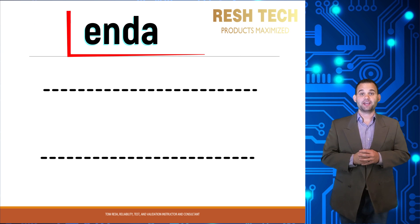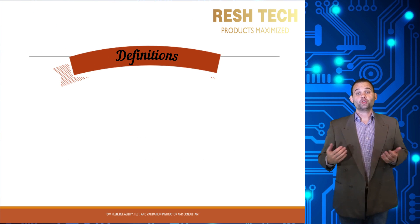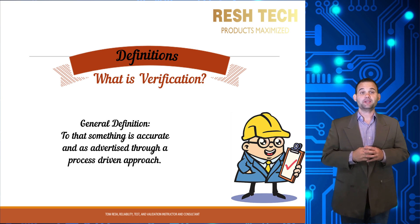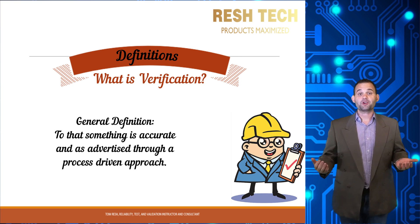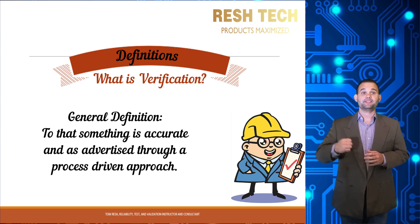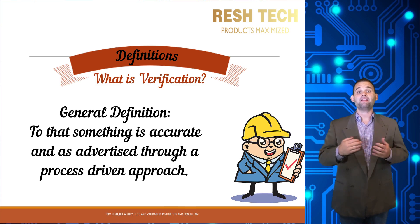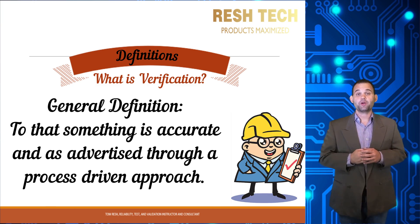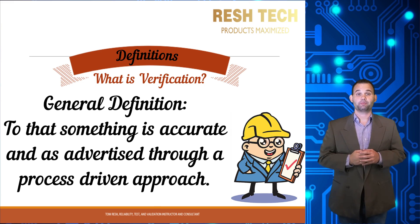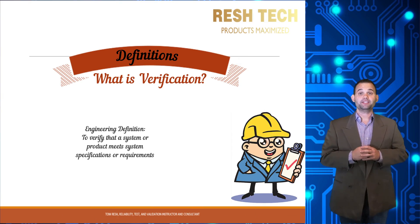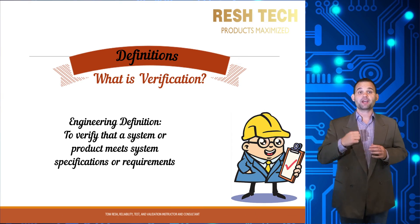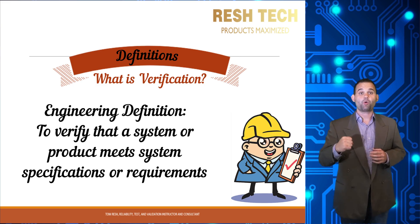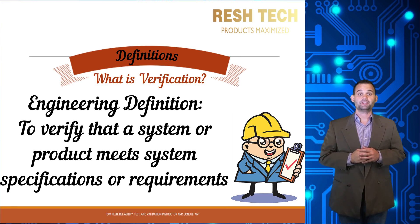Let's cover verification and validation definitions. So what is verification? In general terms, it means to confirm that an object, statement, event, and so forth are accurate and valid, or as intended or advertised, through a process-driven approach. In engineering, it means to confirm that a component, subsystem, or system meets the requirements and technical specifications.